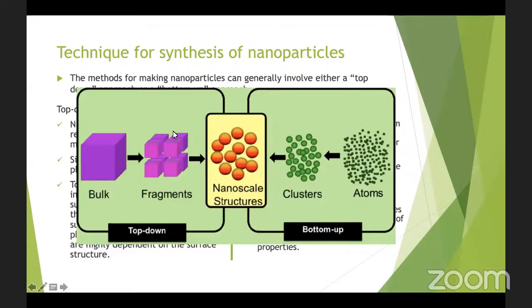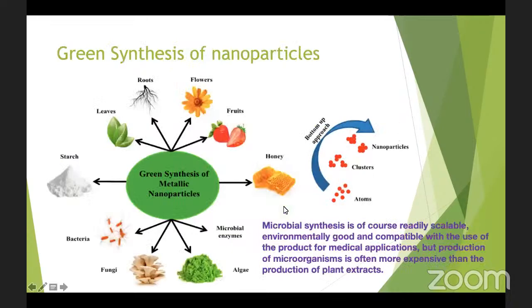This schematic shows how each approach works. In the top-down process, you have a bulk precursor material, break it down into small fragments, and then further break it down to nanoscale structures. In the bottom-up approach, atoms are produced by reducing metal precursors into pure atoms, then these atoms combine to form clusters, and then these clusters combine to form nanoscale products or nanoparticles.